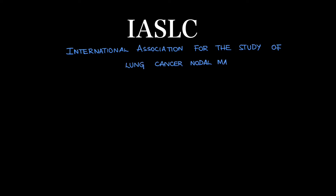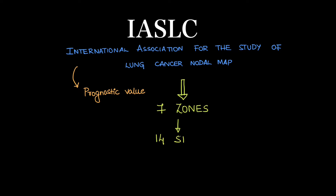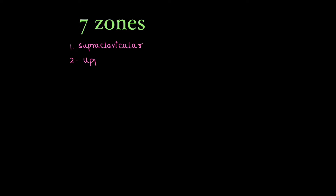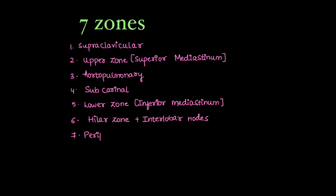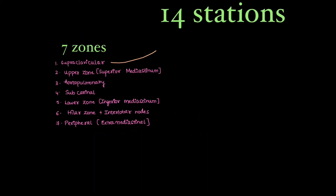IASLC stands for International Association for the Study of Lung Cancer Nodal Map. These lymph node stations have a prognostic value and are divided into 7 zones and 14 stations. The 7 zones are: supraclavicular (zone 1), upper zone or superior mediastinum (zone 2), aortopulmonary (zone 3), subcarinal zone (zone 4), lower zone or inferior mediastinum (zone 5), hilar zone including interlobar nodes (zone 6), and peripheral or extra-mediastinal zone (zone 7).